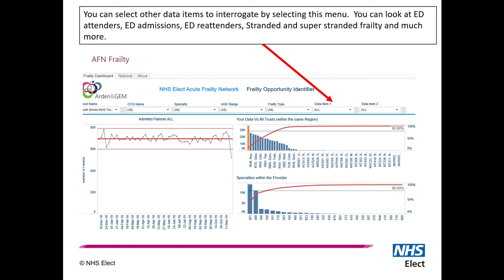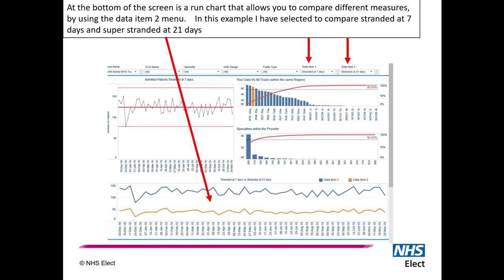On the right-hand side, you can change the data items to many different things, including ED attenders, ED admissions, ED re-attenders, stranded and super-stranded patients, and much more. All of the charts will then change based on your selection.